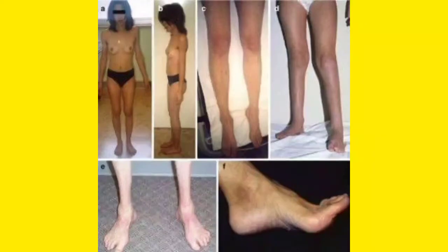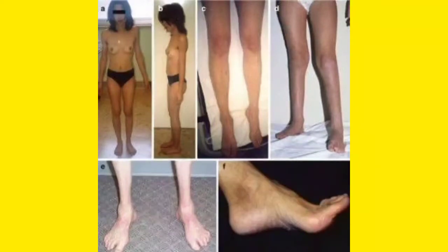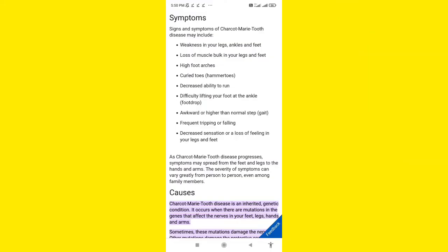Look at this picture — you can see the leg of this patient is just like a stork, and that is known as stork leg. These patients will have weakness and a special gait whenever they walk, known as foot slapping gait.